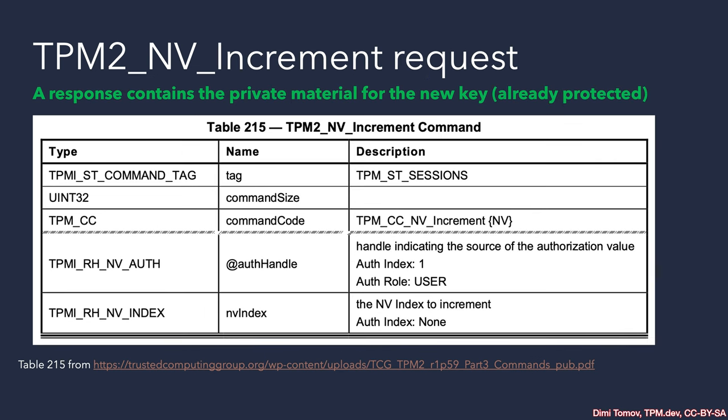Here is an example of a command that cannot use parameter encryption. It can, however, use a TPM HMAC session to protect the overall communication and in particular to protect the authorizations for this command. We don't have any parameter fields here — just the header of the command: tag, command size, command code, and two authorization slots. Therefore, it is recommended to always have an HMAC session started with parameter encryption enabled.